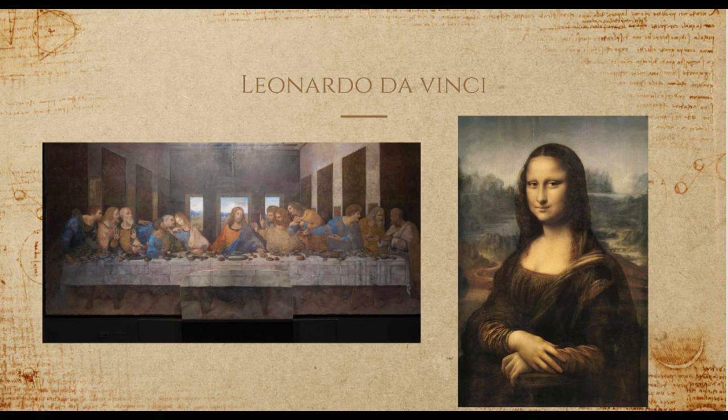Chiaroscuro is Italian for 'light/dark.' It uses the contrast of light and shadows to achieve a 3D illusion on a 2D surface. Leonardo made it his own by adding black pigments while other artists used more saturated hues.